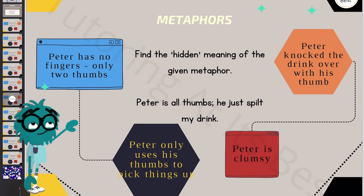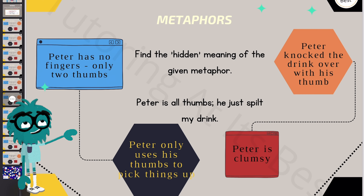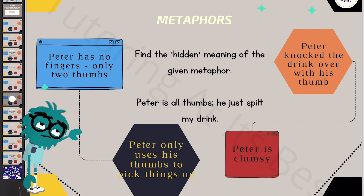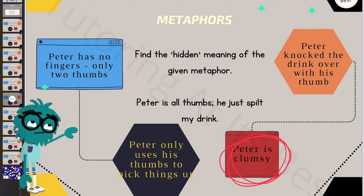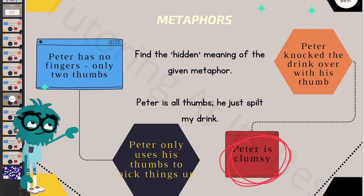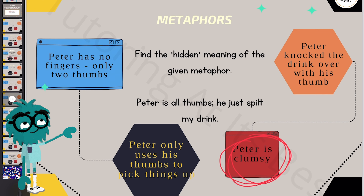'Peter is all thumbs — he just spilt my drink.' So if we use our inference skills here: he just spilt my drink. Out of all of these, it looks as if Peter is clumsy. You'd think all his fingers are thumbs. So that's a good one to remember.